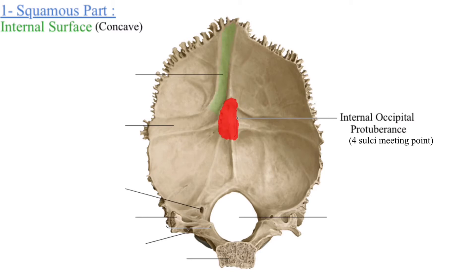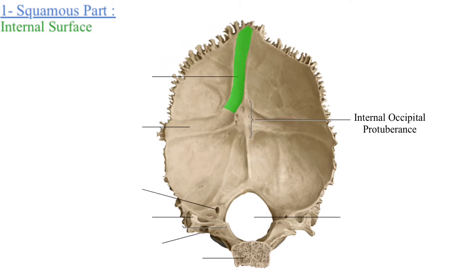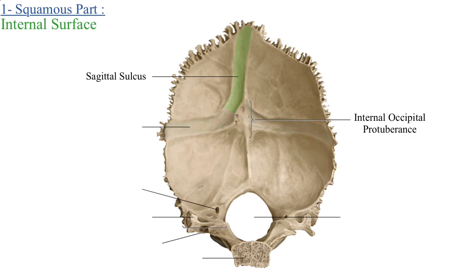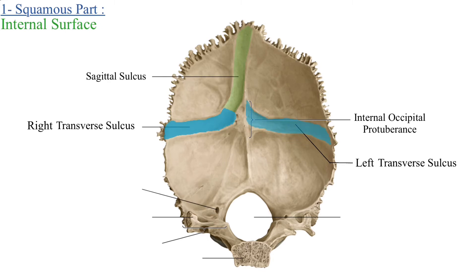The internal occipital protuberance is the meeting point of four sulci: one sulcus from above, two on either side, and one from below. The upper sulcus is called the sagittal sulcus, and it is continuous with the right transverse sulcus, because in the sagittal sulcus is present the superior sagittal sinus, which is continuous with the right transverse sinus. On the two sides of the internal occipital protuberance are the right and left transverse sulci, which contain the right and left transverse sinuses.